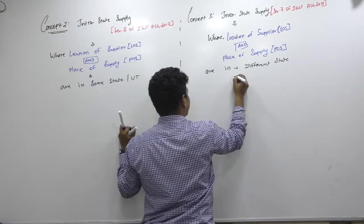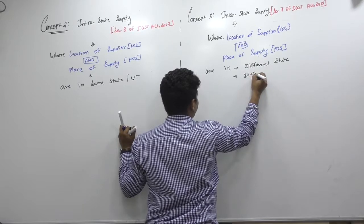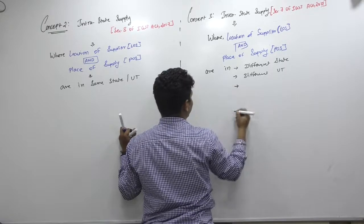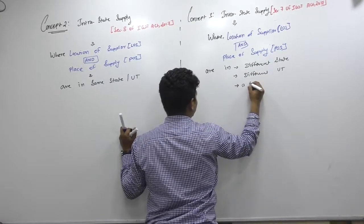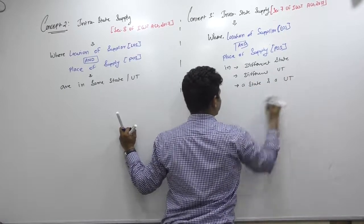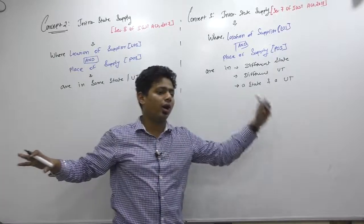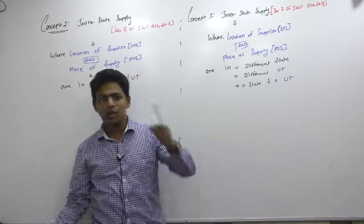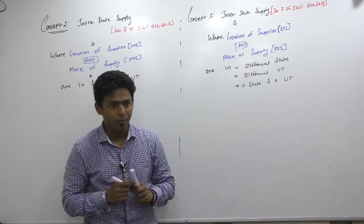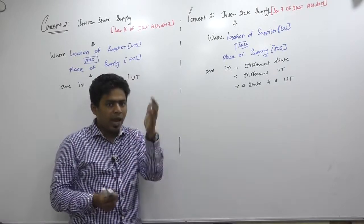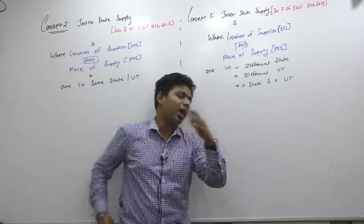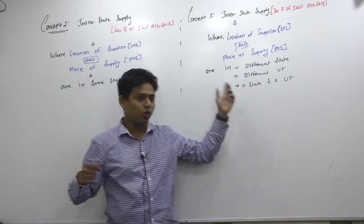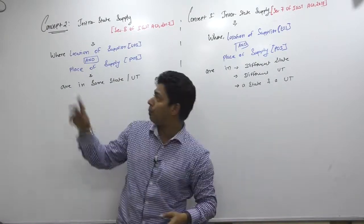Different states or different union territories, or a state and a UT. One state to another state, one UT to another UT, one UT to state, a state to UT—this is interstate. Where commencement of supply and termination of supply is located in different state, different UT, or a state or UT, is interstate supply. If both are located in same state, then only it is intrastate.